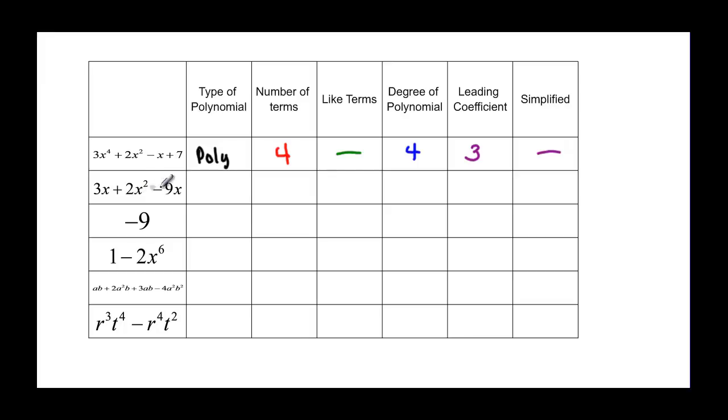For our second one, we have three terms. When you have three terms, that's what we call a trinomial. In this case, we do have some like terms. There's an x term here and also an x term here. So if I list those like terms, I have 3x and I also have negative 9x.